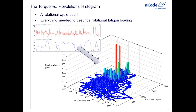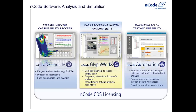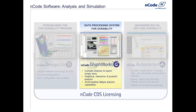Now we're going to switch out of PowerPoint and look at using an actual ENCODE piece of software called GlyphWorks for processing some measured test data. You may have been involved in other webinars focusing on Design Life, which analyzes fatigue performance of finite element models from ANSYS, ABAQUS, or NASTRAN. We're not going to focus on that today — we're going to focus instead on the GlyphWorks application because, after all, the title of this presentation was using measured test data.